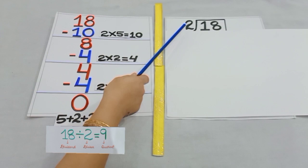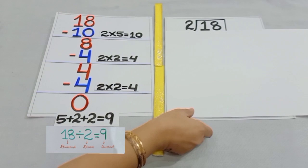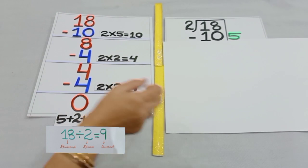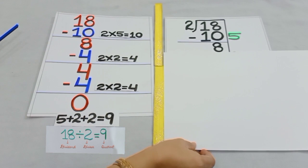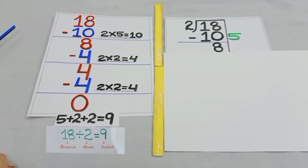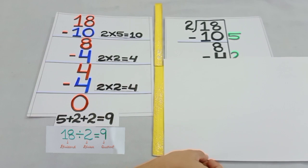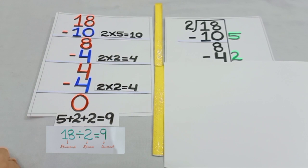Students, to divide the rupees equally between the two children, we gave one note of rupees 5 to both the children. That means two fives are 10. And after dividing rupees equally between the two children, we were left with 8 rupees. And again, we gave one note of rupees 2 to both the children. That means two twos are 4. And after dividing rupees equally between the two children, we were left with 4 rupees.